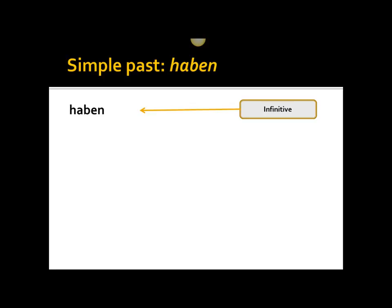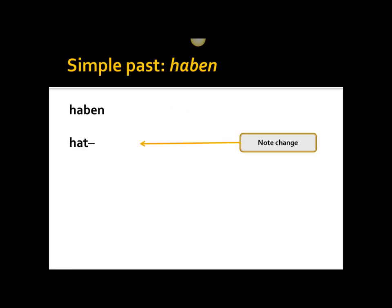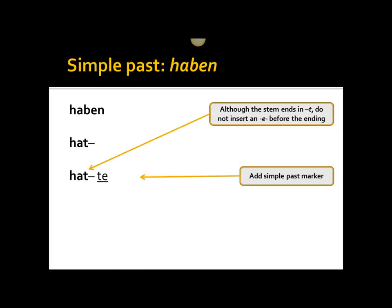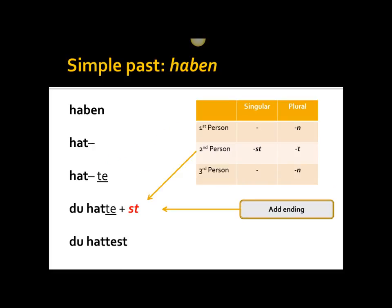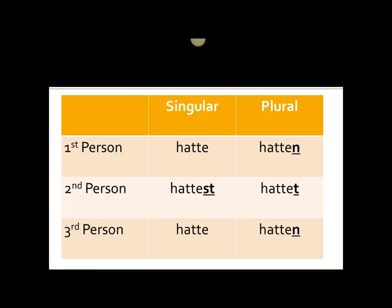Finally, let's look at the verb haben, to have. This is an unusual one — it's technically a weak verb since there's no vowel change in the root, but there is a slight change in the stem. We take the infinitive, remove the infinitive ending, and change the b to a t. Note that even though the stem now ends in a t, we do not insert an e before the simple past marker. So we get hatte, and the full conjugation is: ich hatte, du hattest, er hatte, wir hatten, ihr hattet, sie hatten.